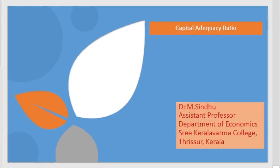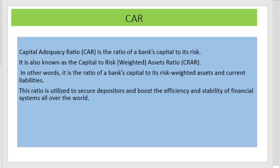In this class we are going to discuss about the capital adequacy ratio. This is a norm introduced by the Basel Committee to sustain the financial strength of banks. Capital adequacy ratio (CAR) is the ratio of a bank's capital to its risk-weighted assets, also known as risk-weighted asset ratio (CRAR). It is utilized to secure depositors and boost the efficiency and stability of the financial system all over the world.